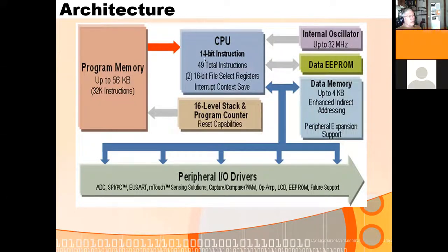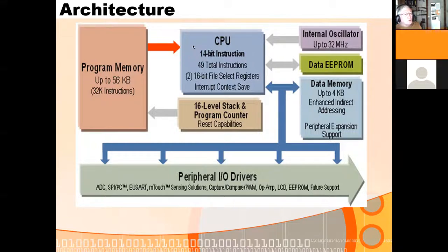When you load a program memory location you're moving the 14-bit instruction into the instruction register in the CPU. As a programmer, even in assembly, I don't think we can get to the instruction register — it's a buried register. It's actually more complicated than that because the processor is pipelined, so it's working on two instructions simultaneously. When it's decoding one it's fetching another. Whenever you branch, it has to flush that pipeline, which is why a branch takes two instruction cycles instead of one.